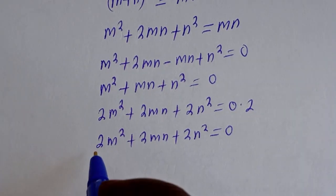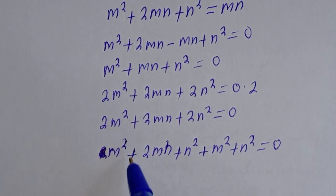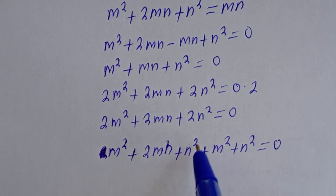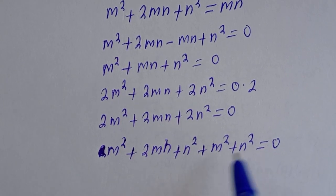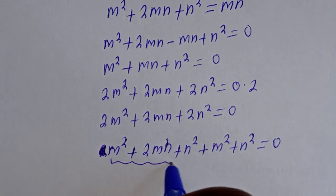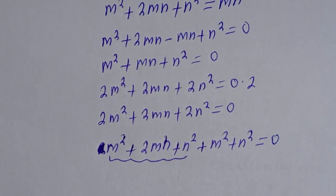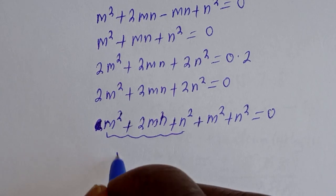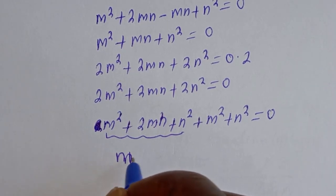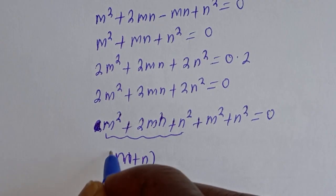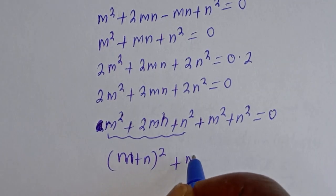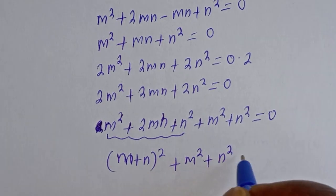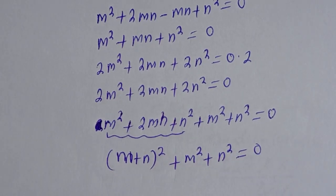Then this can be written as m square plus 2mn plus n square plus m square plus n square is equal to 0. So the whole of these is the same thing as m plus n all square, then plus m square plus n square is equal to 0.